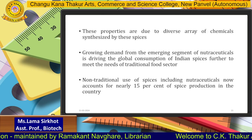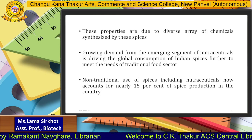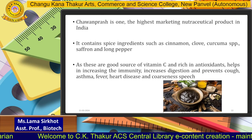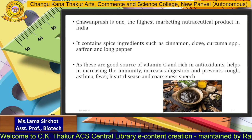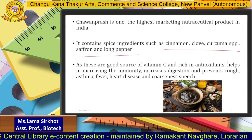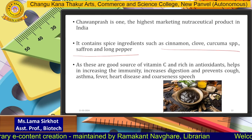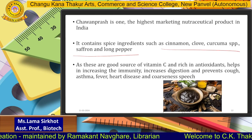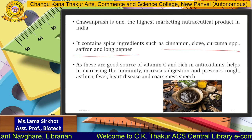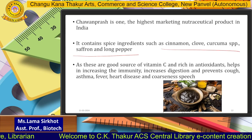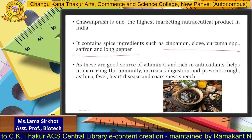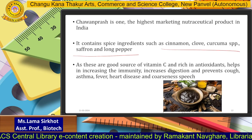A very well-known example of a nutraceutical is Chyawanprash, one of the highest marketed nutraceutical products in India. It contains spice ingredients like cinnamon, cloves, turmeric, saffron, and long peppers, and is a good source of Vitamin C. It is rich in antioxidants and helps in increasing immunity and digestion, and prevents cough, asthma, fever, heart disease, and coarseness of speech. In India, Chyawanprash is consumed in the morning or at night with a glass of milk to boost immunity.